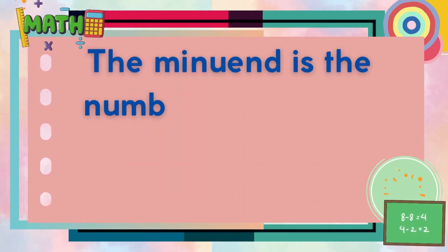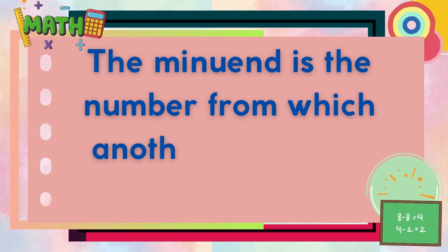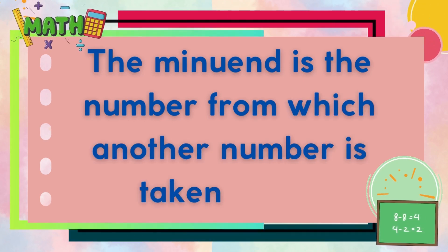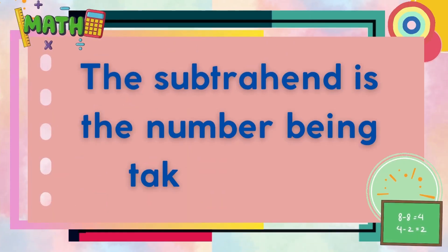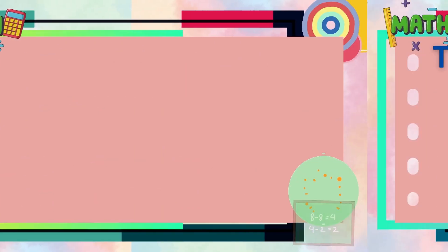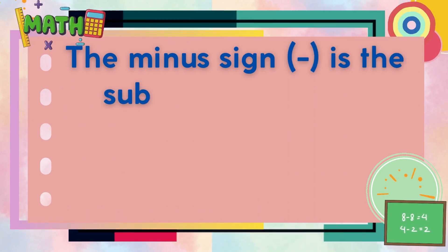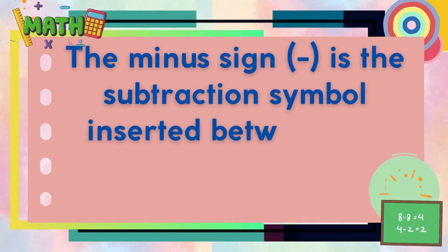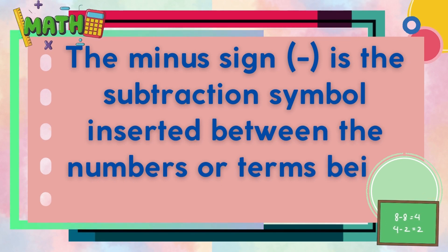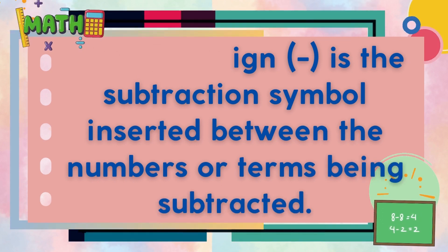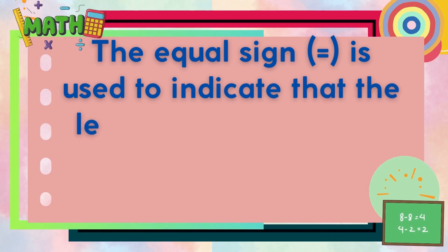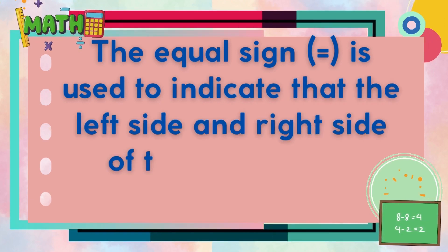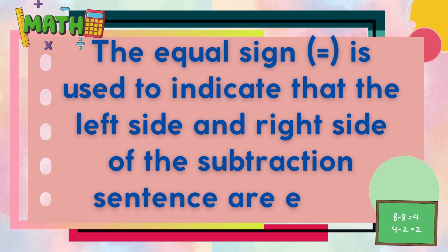The minuend is the number from which another number is taken away. The subtrahend is the number being taken away. The minus sign is the subtraction symbol inserted between the numbers or terms being subtracted. The equal sign is used to indicate that the left side and the right side of the subtraction sentence are equal.